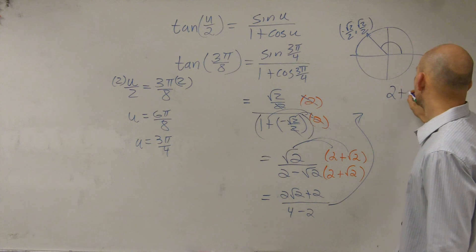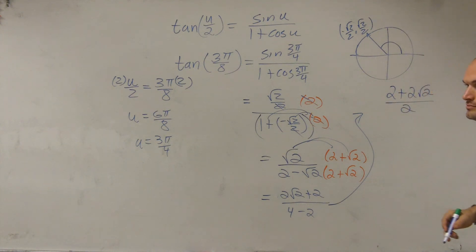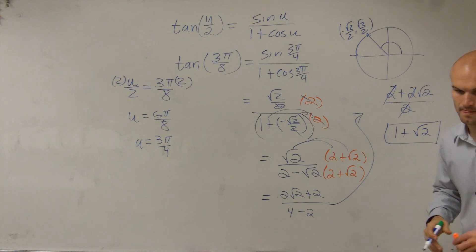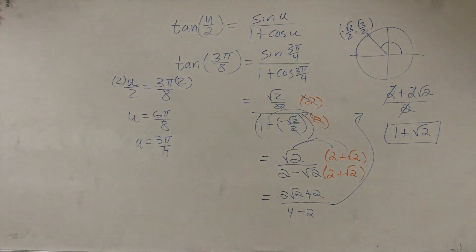So we'll have 2 plus 2 square root of 2 divided by 2, right? 4 minus 2 is 2. And there you go. So it's just kind of a step-by-step process.